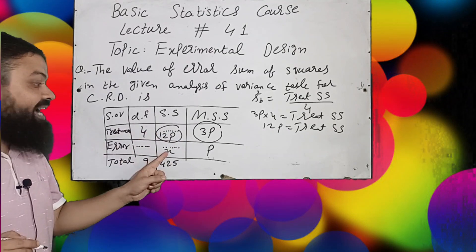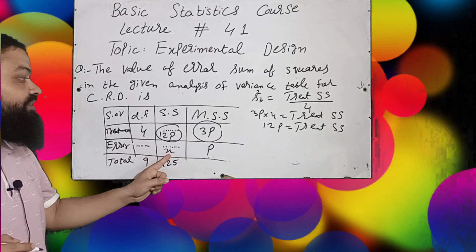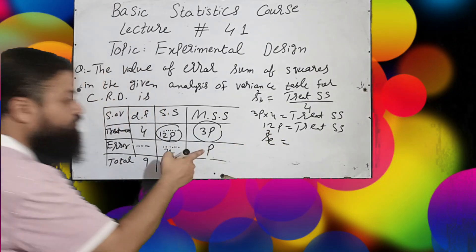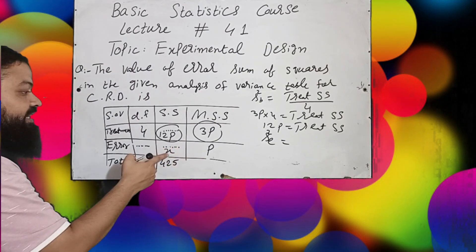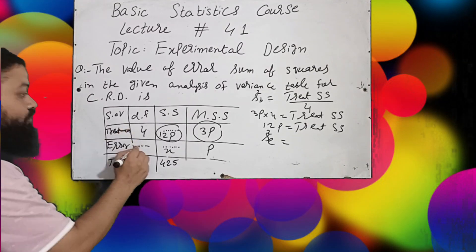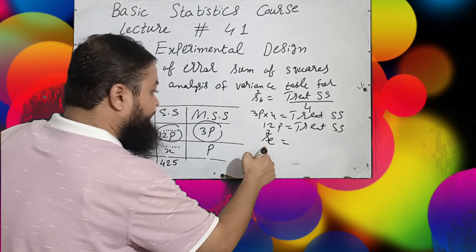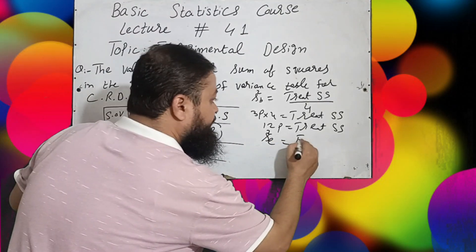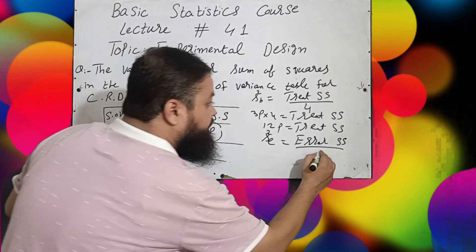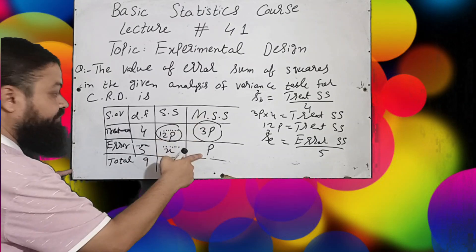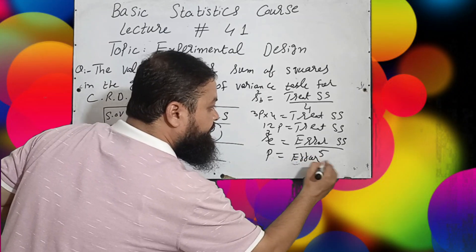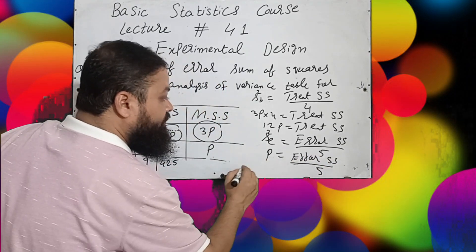Now, how do we get the mean square for the error term? It is achieved by dividing the error sum of squares by its degrees of freedom. The error degrees of freedom is 9 minus 4, which equals 5. So s-squared error equals error sum of squares divided by 5. Since the error mean square equals p, multiplying both sides by 5 gives: error sum of squares equals 5p.